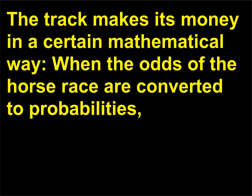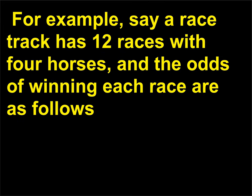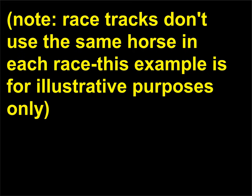The track makes its money in a certain mathematical way — when the odds of the horse race are converted to probabilities, they usually add up to more than 1, giving the track the advantage. For example, say a race track has 12 races with 4 horses, and the odds of winning each race are as follows. Note: race tracks don't use the same horse in each race; this example is for illustrative purposes only.